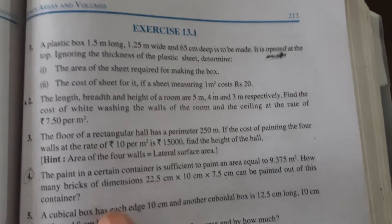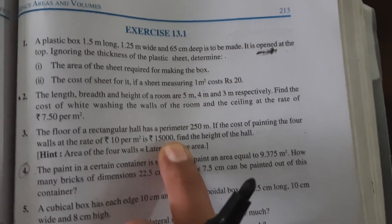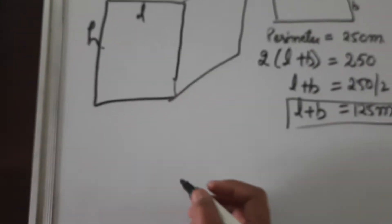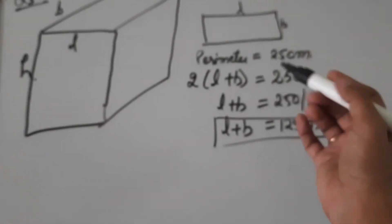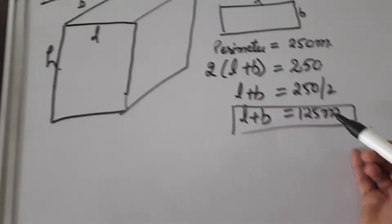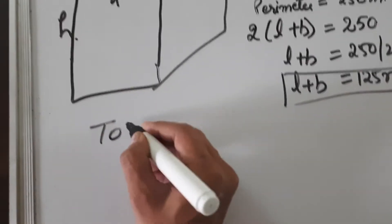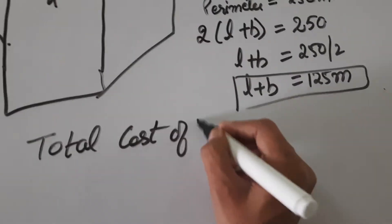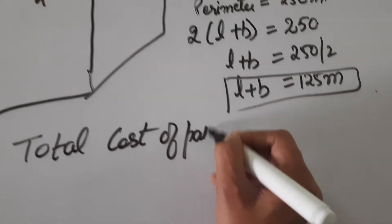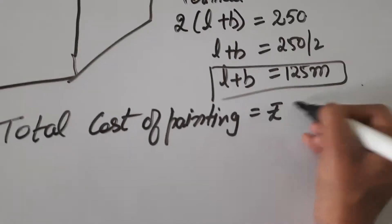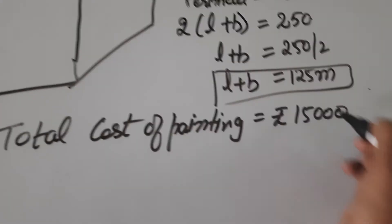The total cost of whitewashing is also given to us — it is rupees 15,000. So write down: total cost of painting is equal to rupees 15,000. Now we need to use this information together with the area formula to find the height of the hall.